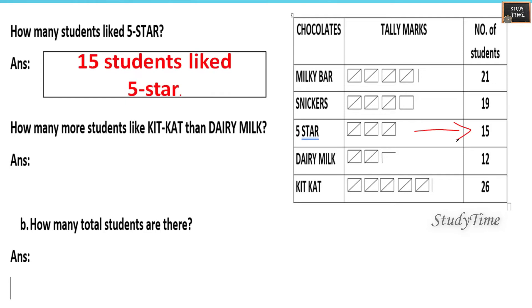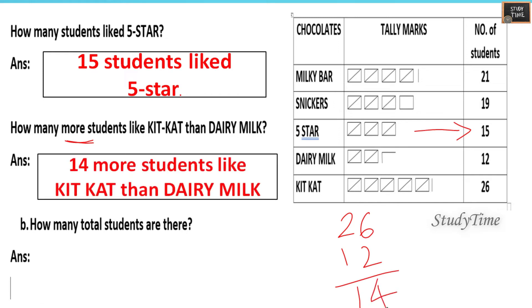Next, how many students liked 5 Star? 5 Star, it is given that it is 15. How many more students like Kit Kat than Dairy Milk? Whenever you see 'more' you have to subtract. So Dairy Milk is 12, Kit Kat is 26. 26 minus 12, the answer is 14. So 14 more students liked Kit Kat than Dairy Milk. How many total students are there? Total students are 93. You have to add all the numbers.